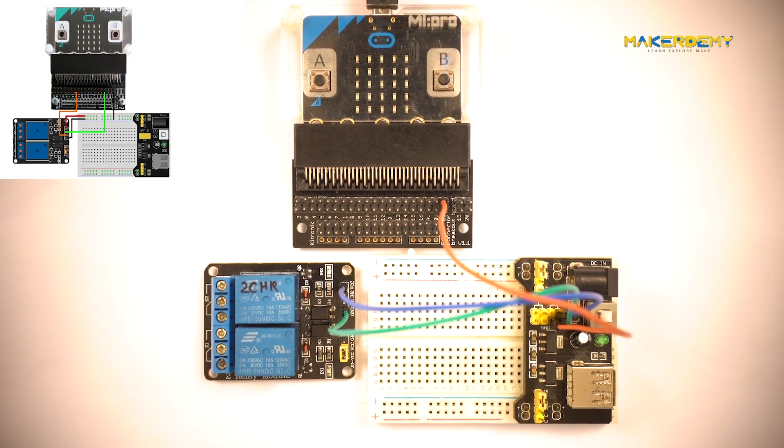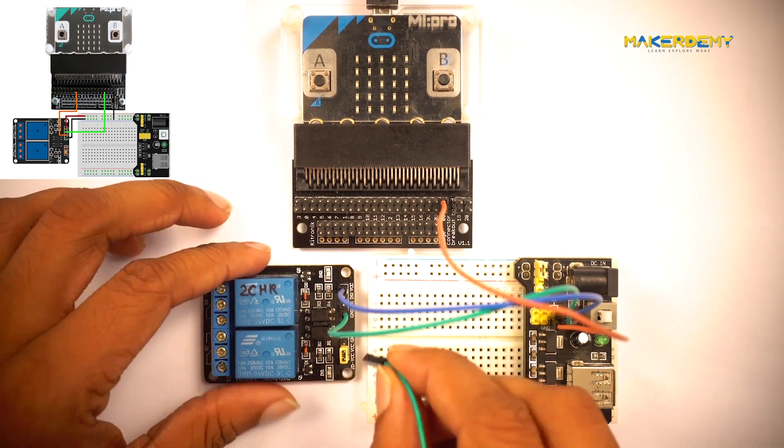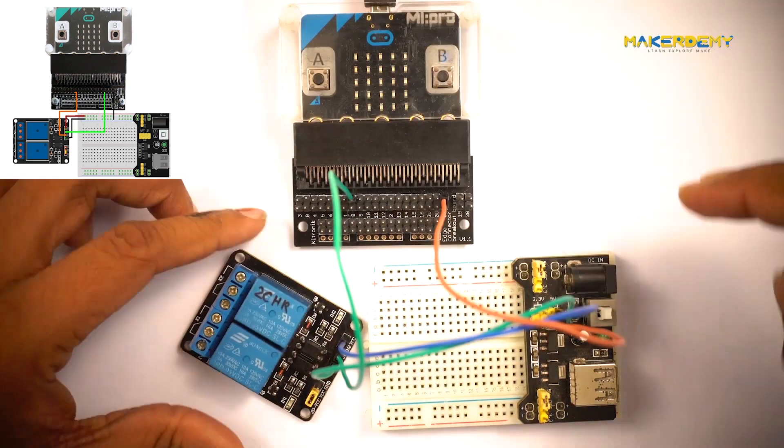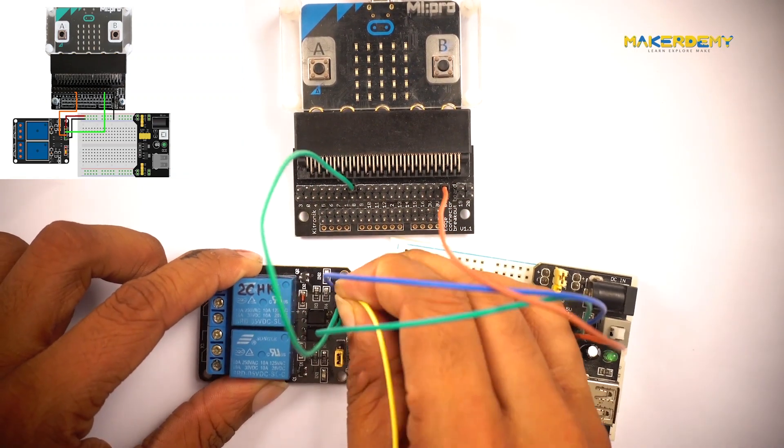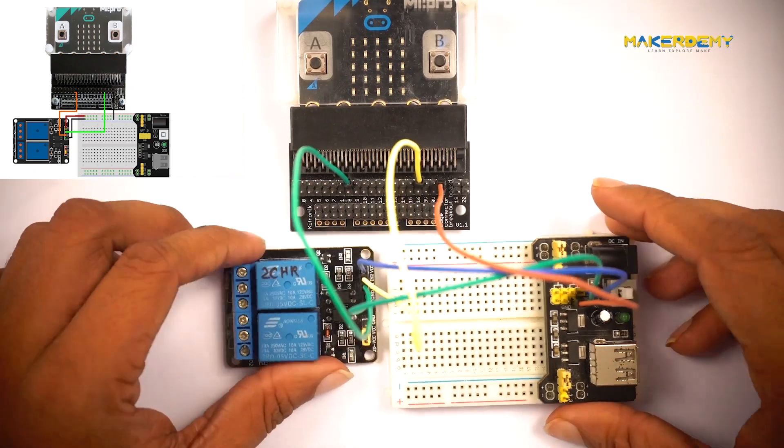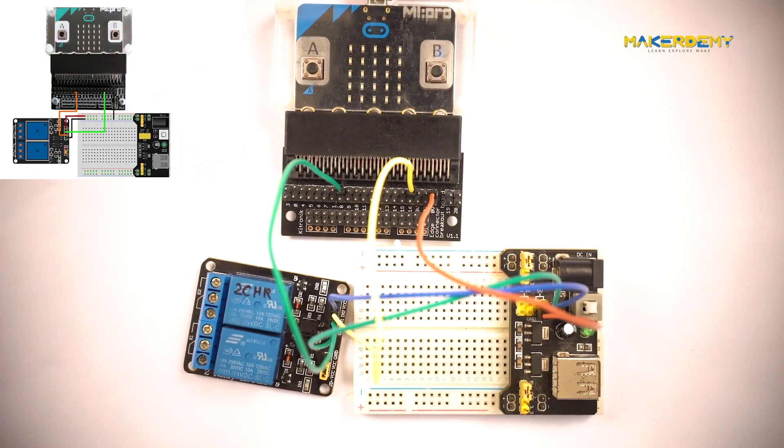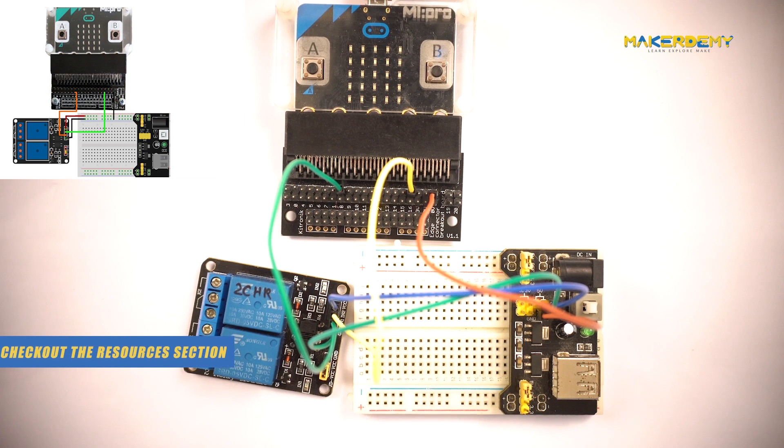In this section, we will use the digital pin 8 and pin 16 of the micro:bit to control the relay. So connect IN1 pin of the relay to pin 8 of the micro:bit. Next, connect IN2 pin of the relay to pin 16 of the micro:bit. To know why we use these specific pins, check out the link in the resources section. We have now finished interfacing the micro:bit with the relay.